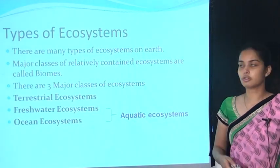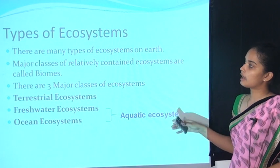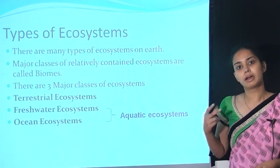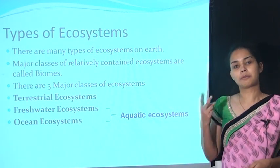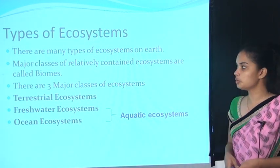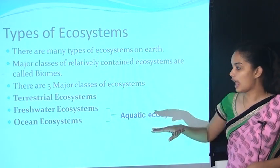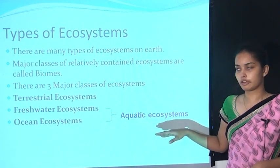Now, types of ecosystem. There are many types of ecosystem on the earth, but basically they can be divided into two parts: the terrestrial and the aquatic ecosystem.